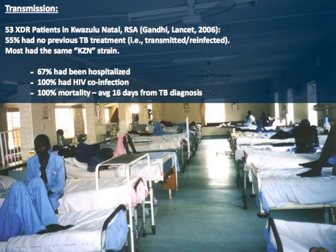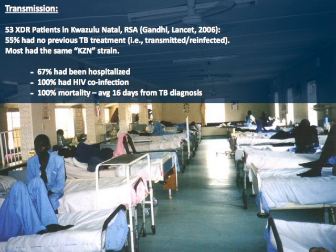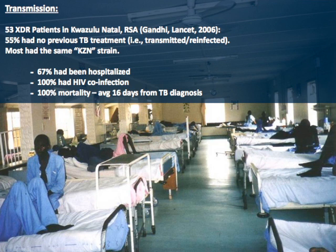Here is a familiar setting — a paper on the transmission of XDR-TB reported in Lancet in 2006, whereby 53 XDR patients were discovered in one hospital. Two-thirds had been hospitalized, all had co-infection with HIV, and 55% had had no previous treatment. That indicates they were reinfected with this characteristic KZN strain, indicating hospital transmission. This illustrates one of the dangers of treating MDR-TB in hospital.